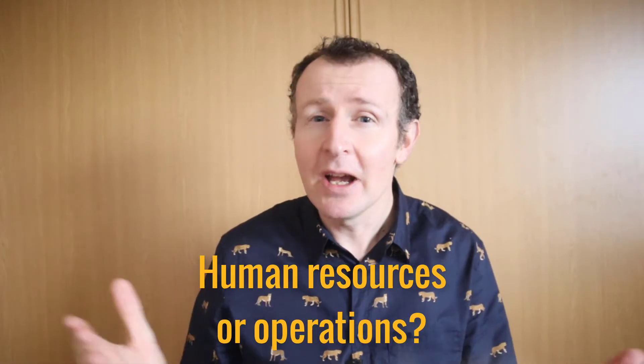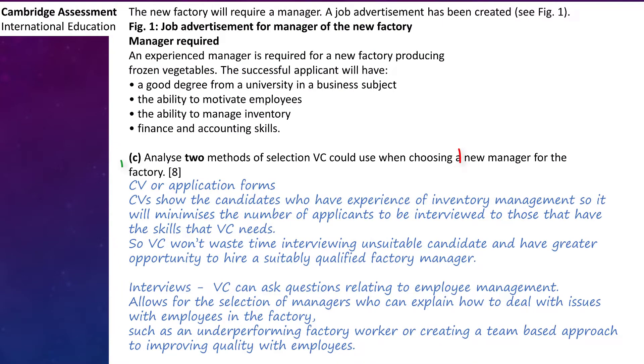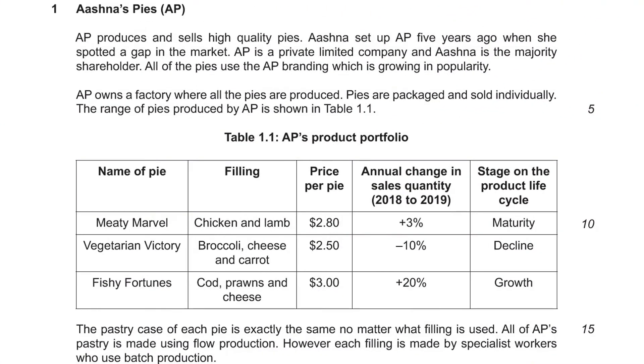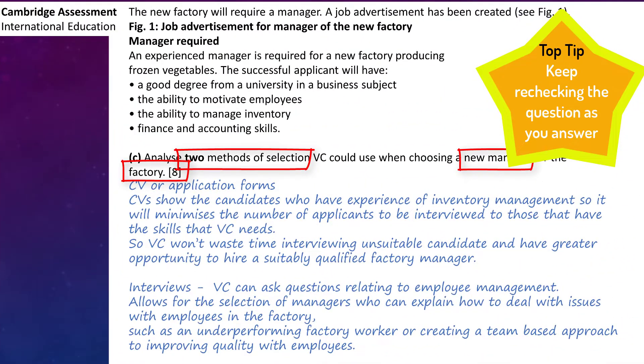Number two: focus on the subject in the question. Is the question asking about employees or managers, human resources or operations? To score the highest marks, you need to find out exactly what the question is asking, and then stay focused on the question throughout your answer. What often separates C and A grade students is this ability to stay focused throughout the essay. This allows you to select the most relevant application or evidence from the case study. Often students go completely off on a tangent and write pages of content that don't score any marks because it's not answering the question. A top tip is to underline the keywords and keep checking back to make sure you're actually answering the question.